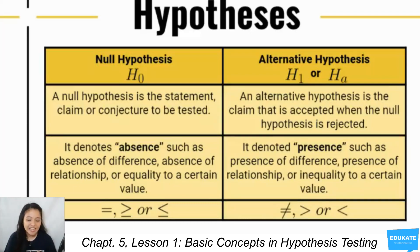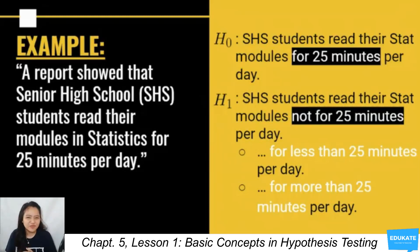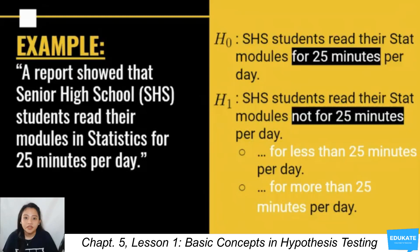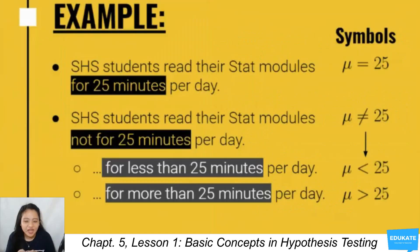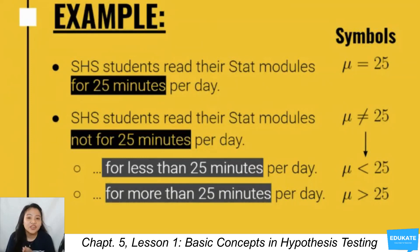For example, a report showed that senior high school students read their statistics modules for 25 minutes per day. Our null hypothesis would be: SHS students read their stat modules for 25 minutes per day, written as μ = 25. Our alternative hypothesis would be: SHS students do not read their stat modules for 25 minutes per day, written as μ ≠ 25. If it's less than 25 minutes, that's μ < 25; and if it's more than 25 minutes, that's μ > 25.